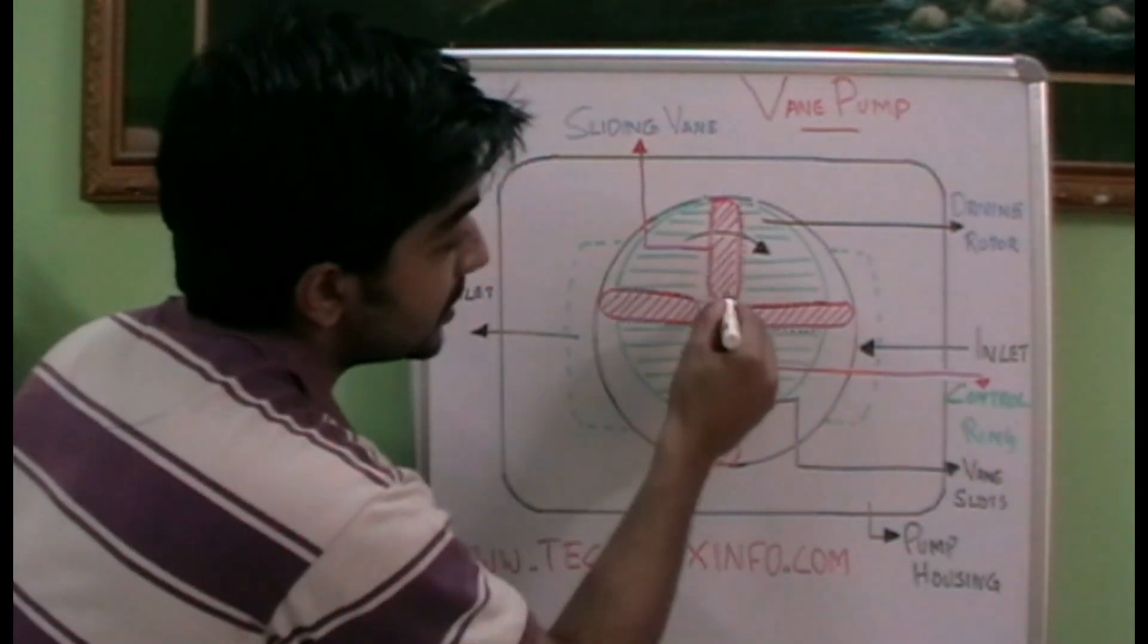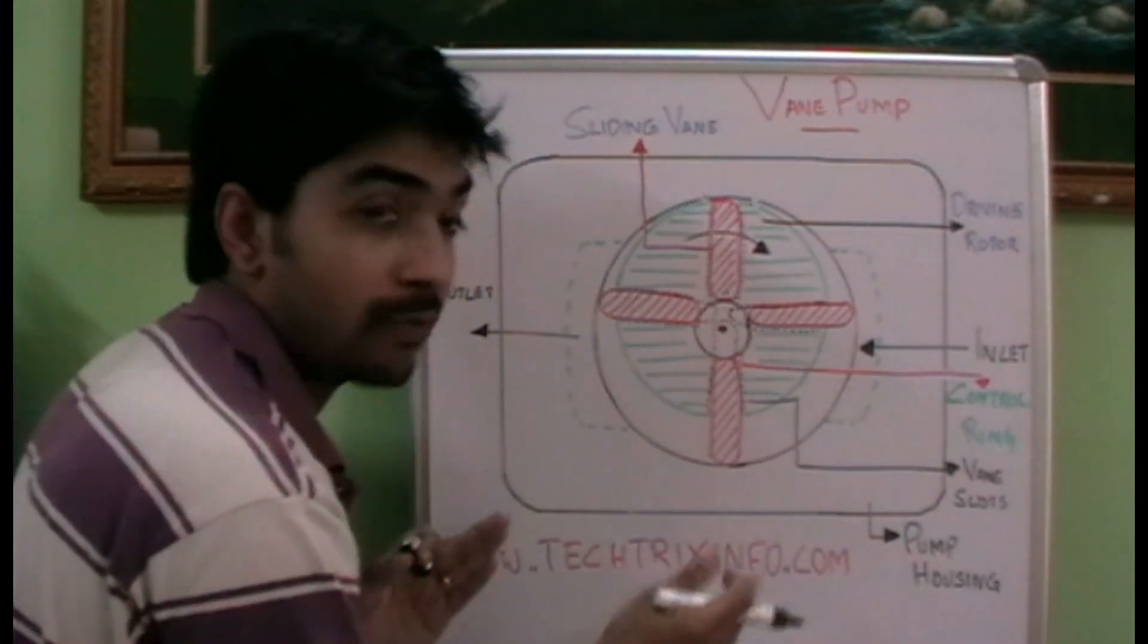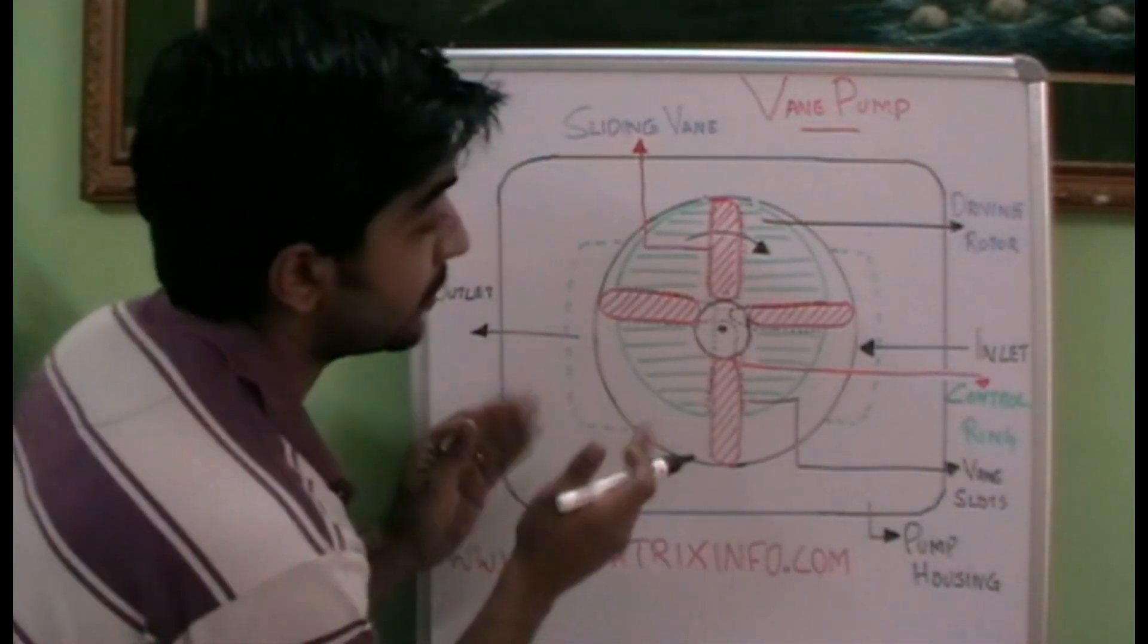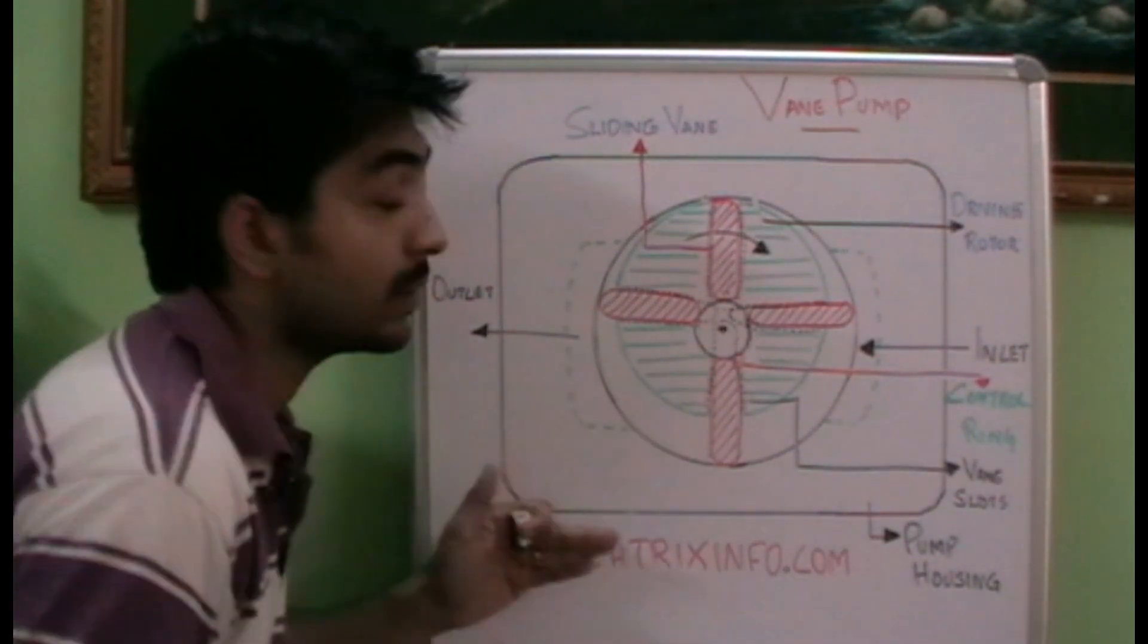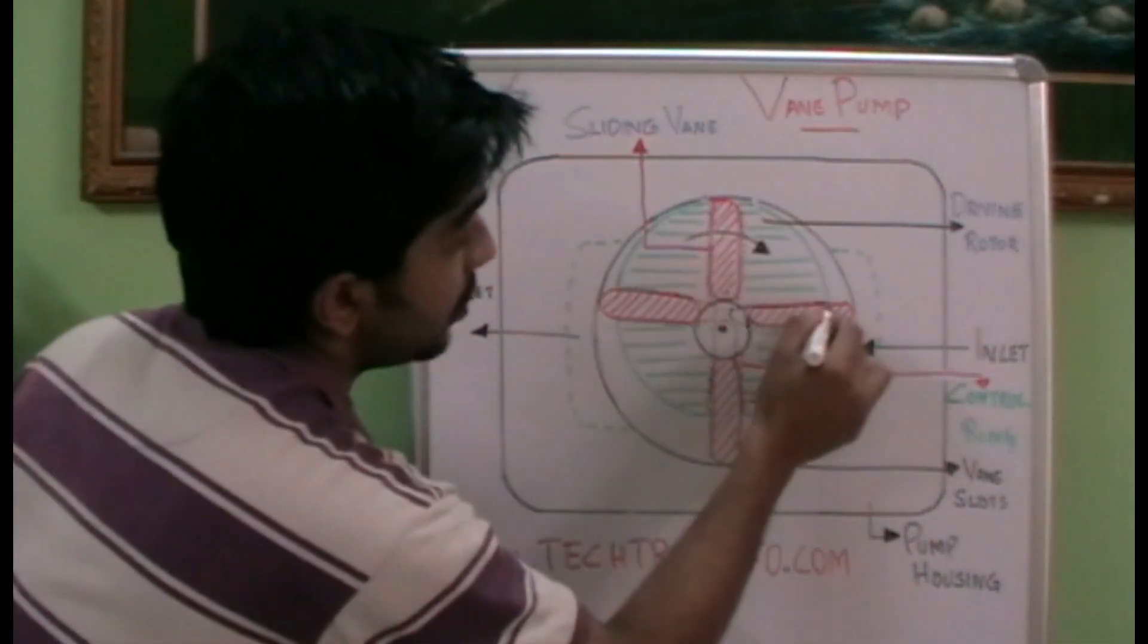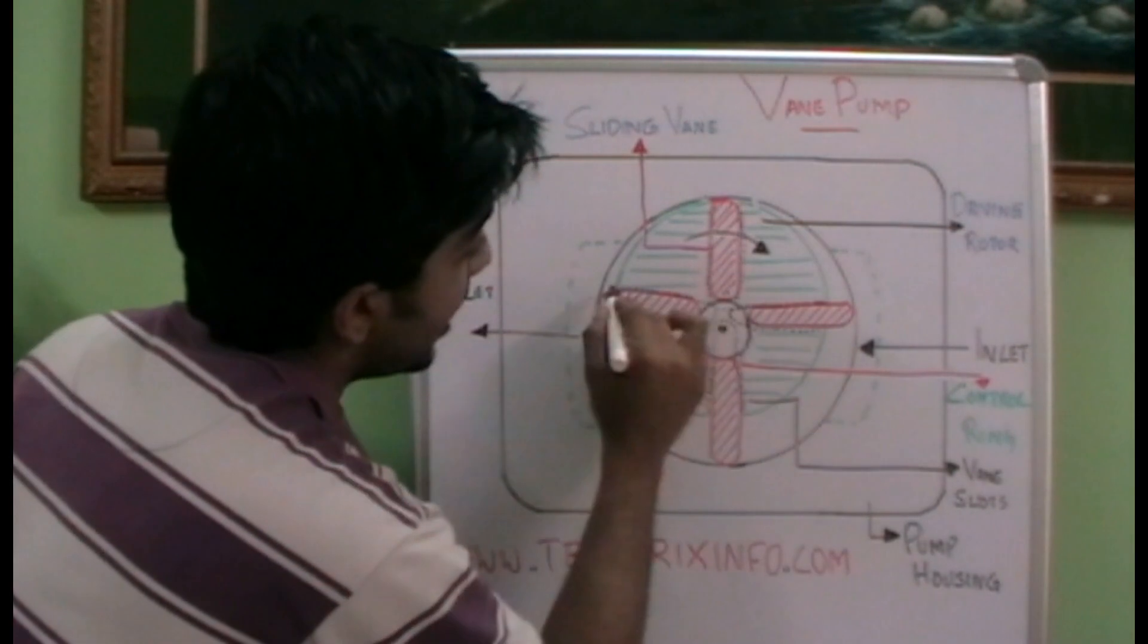So this is actually this much distance away from the center of the pump housing. It is eccentrically placed from the pump housing. It has a purpose to serve, which we will see when the working is explained. And this driving rotor has got slots. You can see the black marked slots.